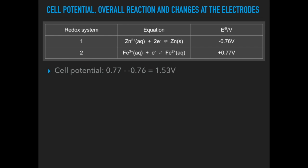So the cell potential first is the most positive standard electrode potential minus the least positive. So we've got a double negative there. So that means it's essentially that plus that which gives us a voltage of 1.53 volts.